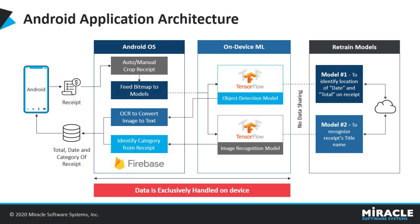To identify the store name and category of the receipt, the same bitmap image is fed to another ML model, which employs image recognition to identify the store name from a list of labels. It takes less than two seconds to receive output from these models, as the models are on the device and there is no latency in communication. Both models are trained periodically and uploaded to servers. The Android app, on availability of a network connection, checks if new models are present on the server, and if the model version is greater than the one on the device, it downloads it automatically. The data is always secure on the user's device and is exclusively handled offline.